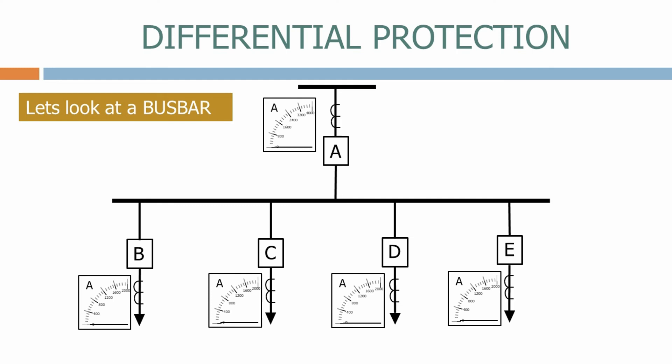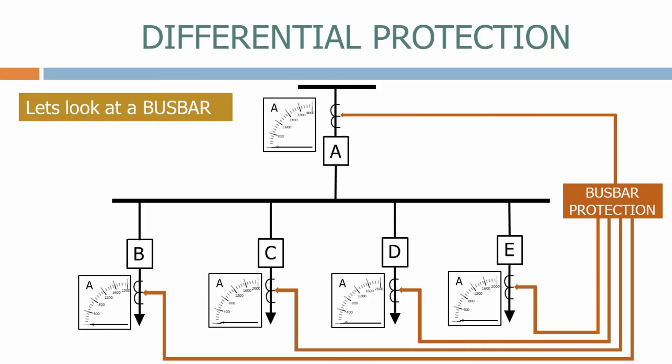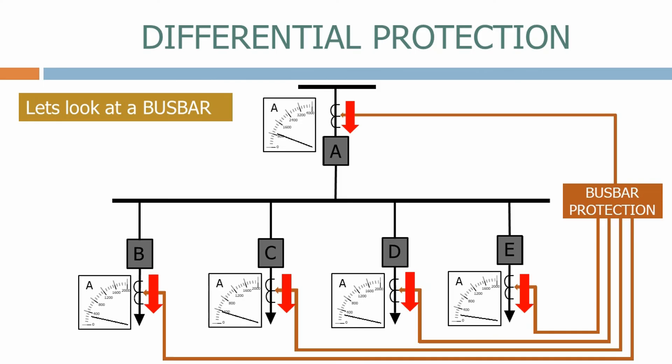Let's look at a busbar. Here we have an electrical system with an incomer feeding a busbar connected to four feeders. A busbar protection scheme needs to measure all of the currents flowing into and out of the busbar. The busbar differential scheme therefore measures the currents on all incomers and feeders. As expected, the current magnitudes on each circuit vary continuously as the loads change, but the sum of the currents flowing into and out of the busbar will always equal zero.